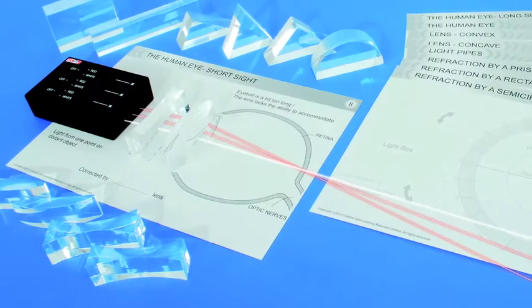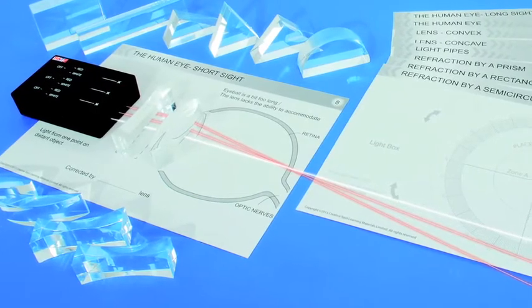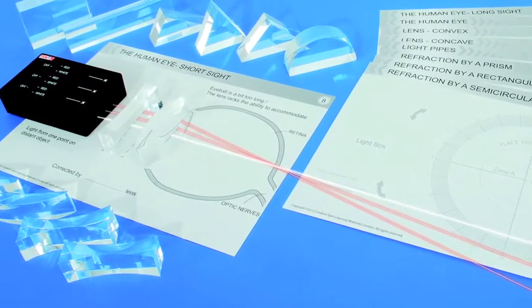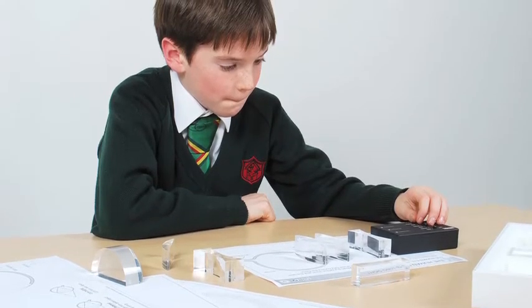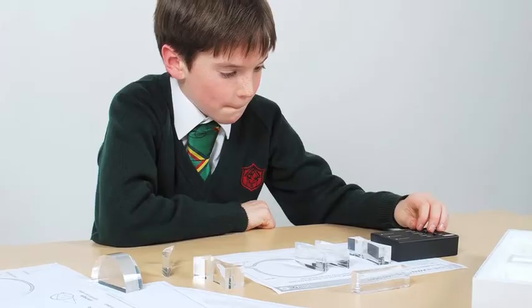The LED light box and optical set provides everything required to study light reflection and refraction and is suitable for use with children from eight years of age but also provides everything required up to GCSE level.